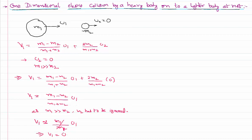That means the first body, after one-dimensional elastic collision, if it is very heavy compared with the other body, continues to move as if nothing has affected it — it will have the same velocity even after the collision. Let us now write about the second body.